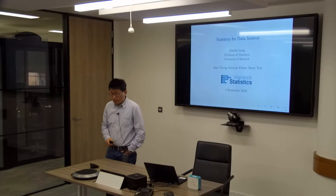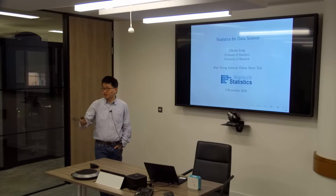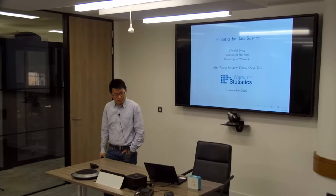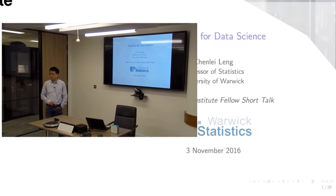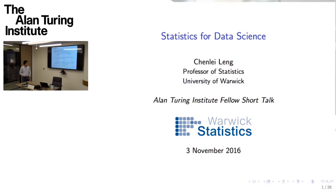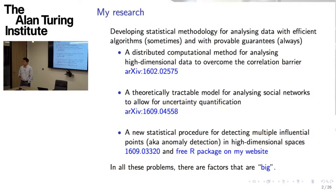My link to the Turing Institute is because I do statistics, and I also have a bright student sitting in the audience — I hope to be able to speak on some of the themes we are working on next time. I want to talk about what I have been working on recently. My research interest is developing statistical methodology for analyzing data. I usually develop not-so-efficient algorithms, but I always like to have theoretical guarantees for the methods I develop. Today I'm going to talk about three recent projects, and these reports are on arXiv and you can download them.